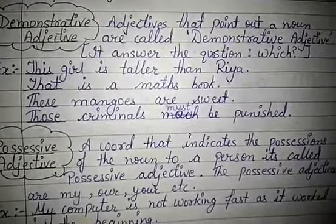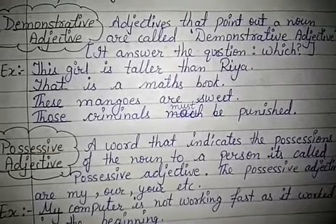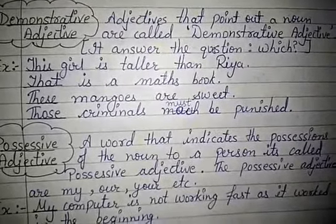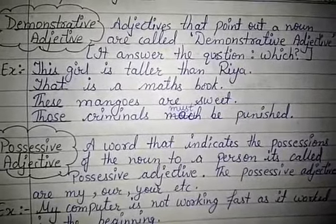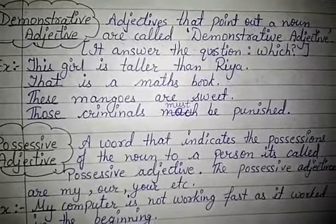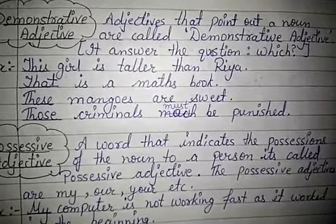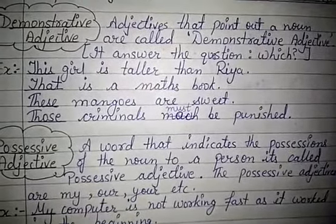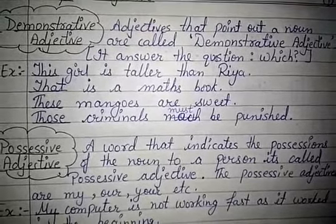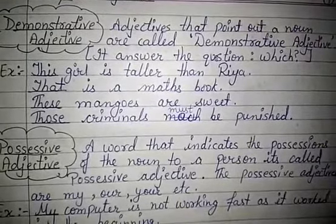Adjectives that point out a noun are called demonstrative adjectives. It answers the question 'which.' For example: 'This girl is taller than Rhea.' 'That is a maths book.' 'These mangoes are sweet.' 'Those criminals must be punished.' Here, this, that, these, and those are all demonstrative adjectives.